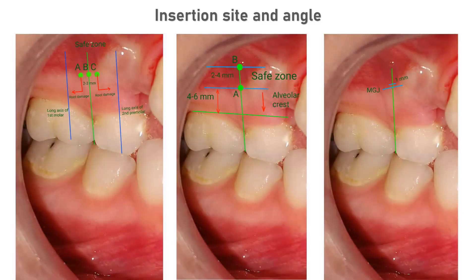When an orthodontic implant is inserted in the maxillary buccal area, slight adjustments in anterior-posterior positioning may be needed, depending on the plan for anterior-posterior movement of adjacent teeth. For molar distalization, the insertion position is located 1–2 mm distal to the imaginary central line between two teeth. For molar protraction, the insertion position is placed 1–2 mm mesial to the imaginary central line. If there is to be no mesiodistal movement of the adjacent teeth, the insertion position is located on the center line between the molar and the premolar.